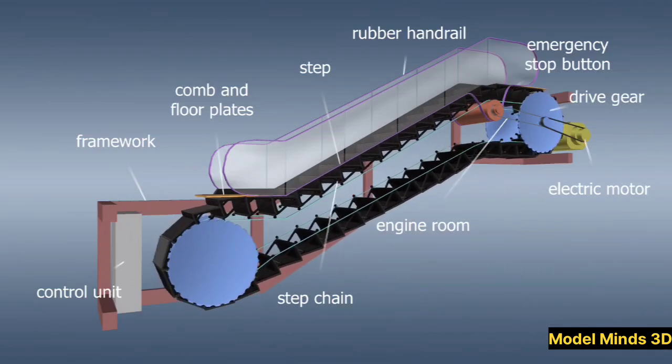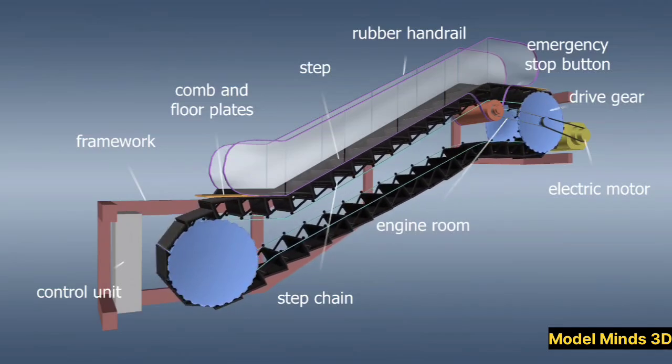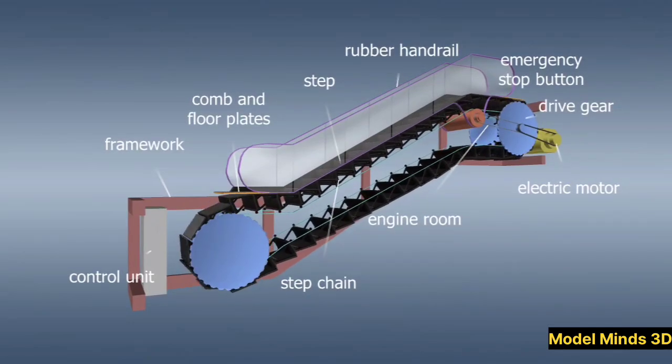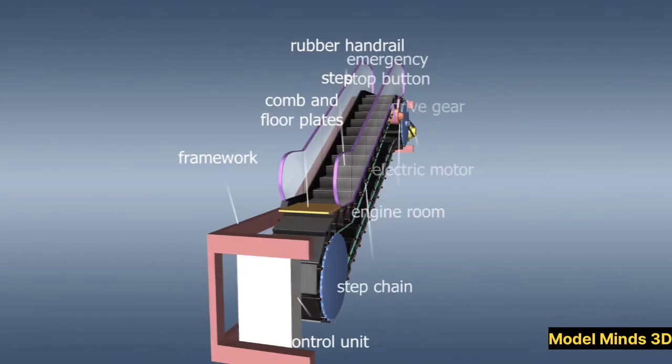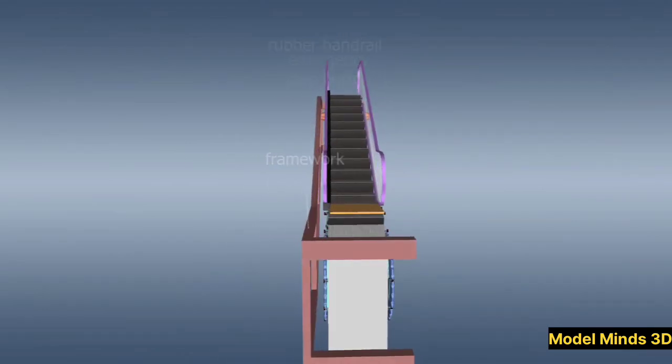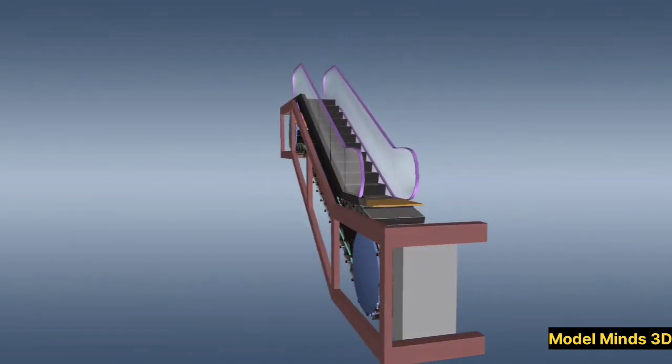Step movement. Unlike a conveyor belt, the steps do not remain flat but cycle through a precise track system. As steps rise, they remain horizontal for passenger safety and then collapse into a flat loop when they return to the base.